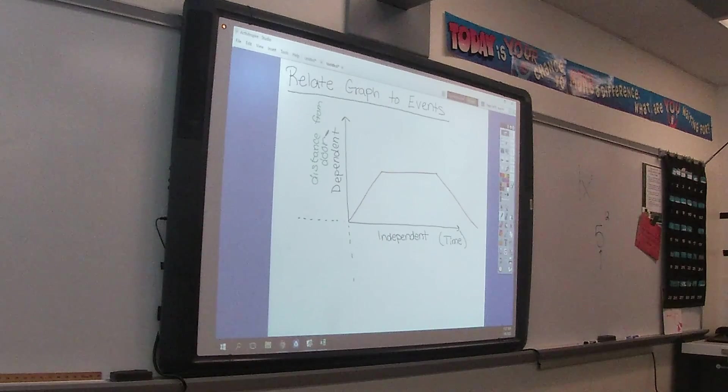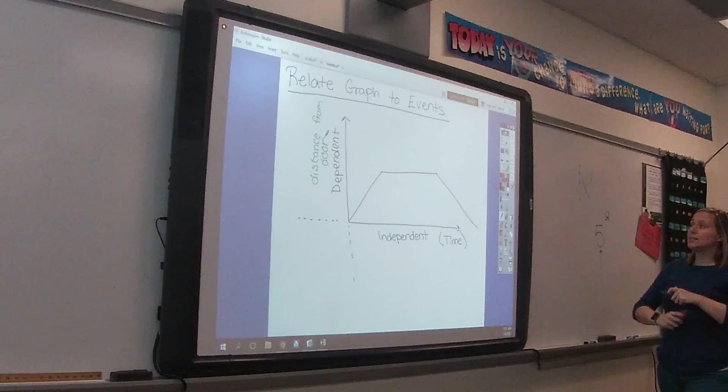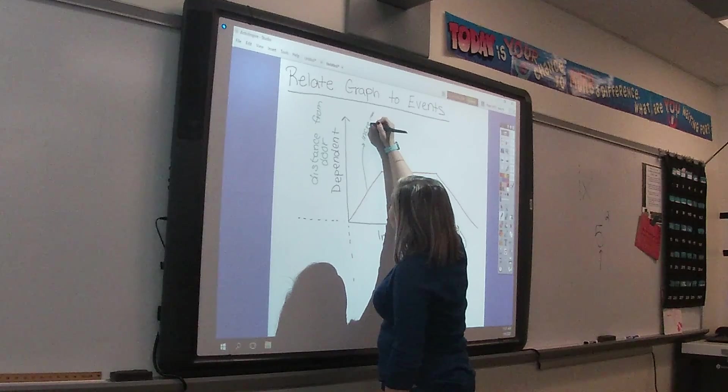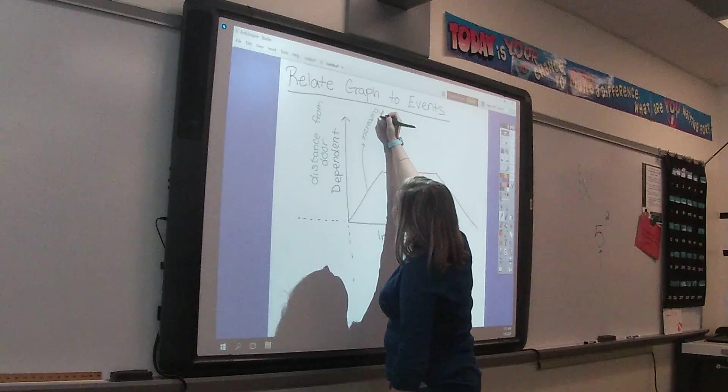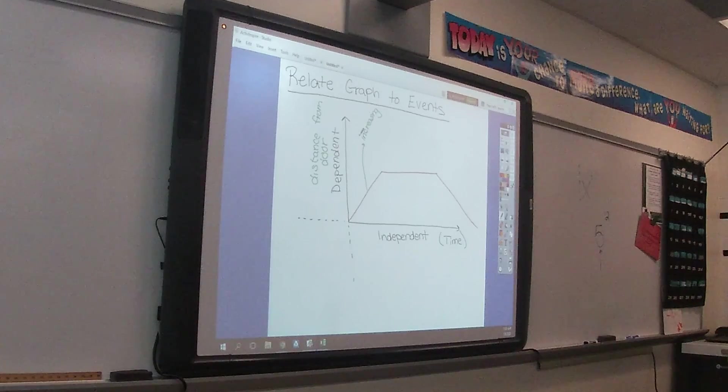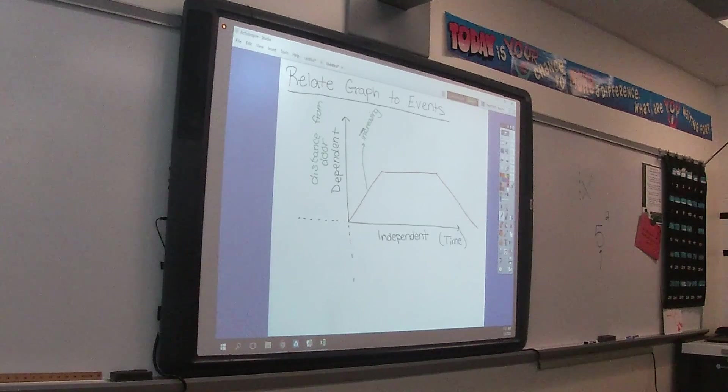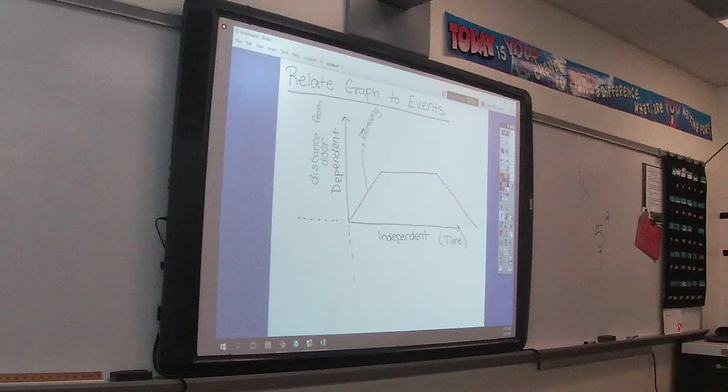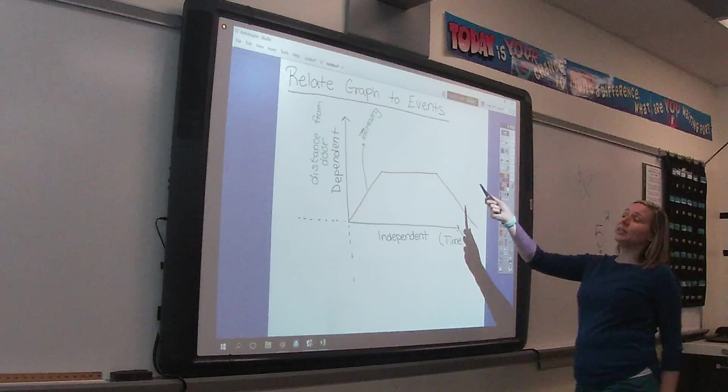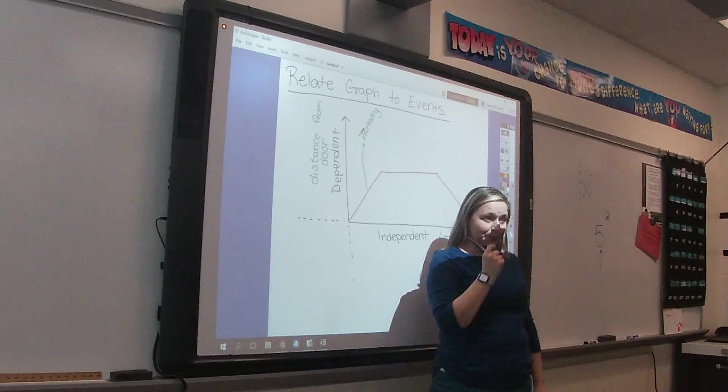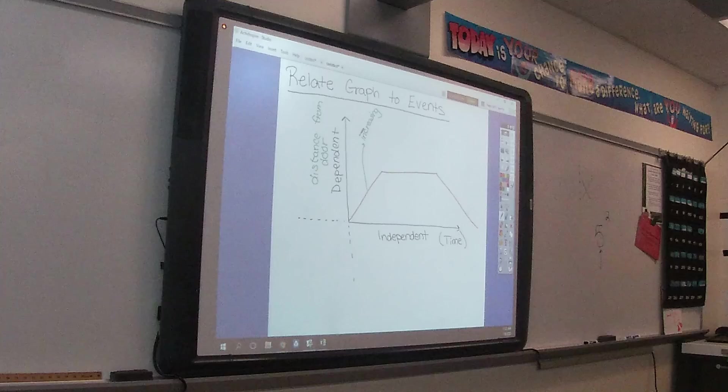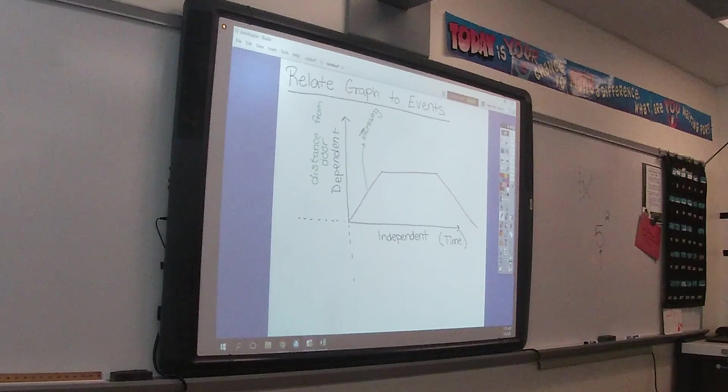What word do we associate with it when that line is going uphill? Increasing. I have an increasing distance from the door. So right here, this gets a label of increasing. And this is going to be really important. Students like to make up other words that seem reasonable. But we don't ever want to assume anything. The only thing that we can assume is that it is an increasing distance from the door.